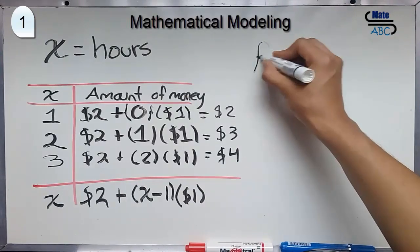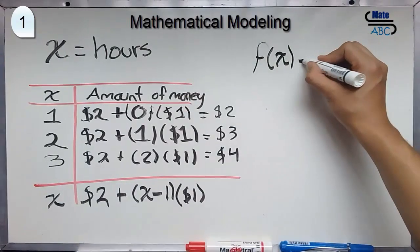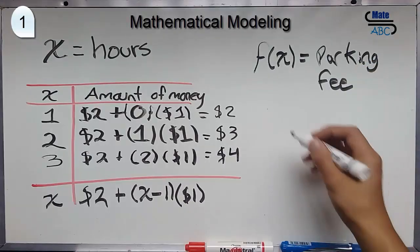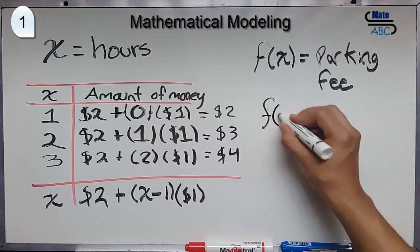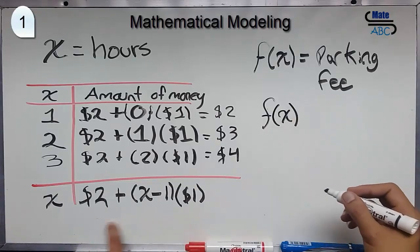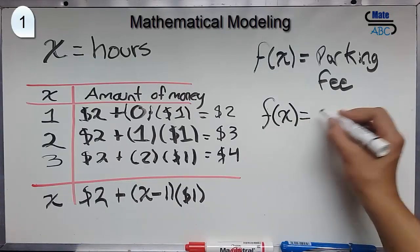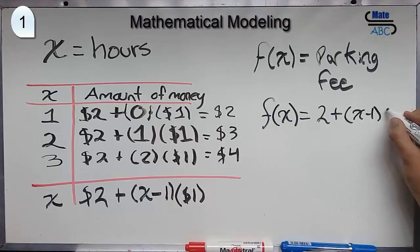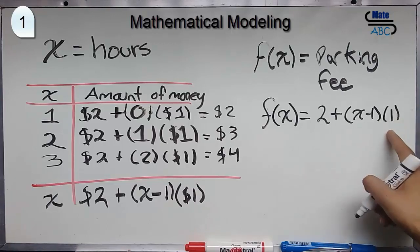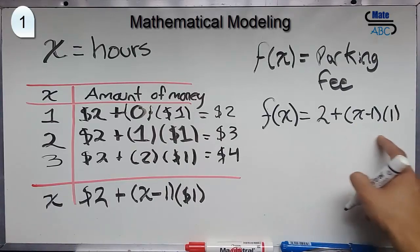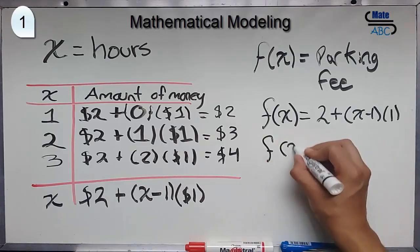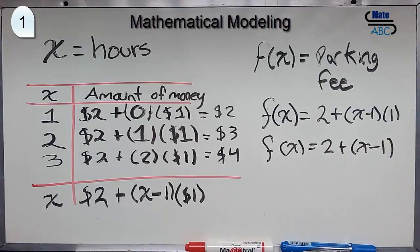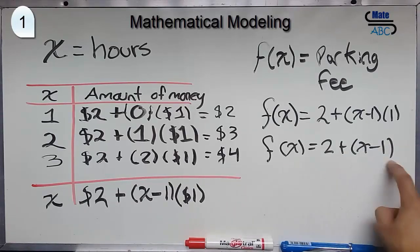We have that f of x equals the parking fee. f of x will be this general rule that we found here, will be 2 plus x minus 1 times 1. But, as you can see here, by the identity property, you will have that f of x equals 2 plus x minus 1. This will be the general rule.